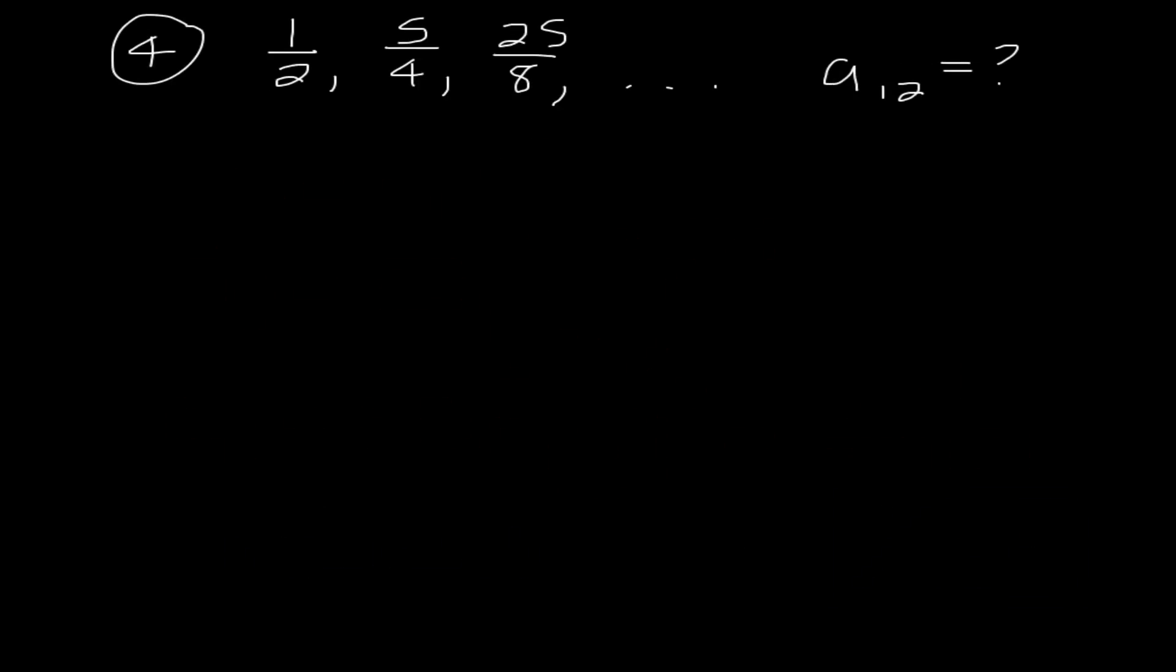So number four is actually our last example because once again, this is pretty repetitive today. We're really just introducing this formula. Number four, I have no clue. Is this arithmetic? Is it geometric? Now, obviously, since this is our geometric day, my guess would be geometric, but we need to figure out, do we have a ratio? So I'm doing 5/4 over 1/2 because I know it's any term divided by the previous term. 5/4 times 2/1 is 5/2. And let's just double check. 1/2 times 5/2 is 5/4. 5/4 times 5/2 is 25/8. So it definitely does work.